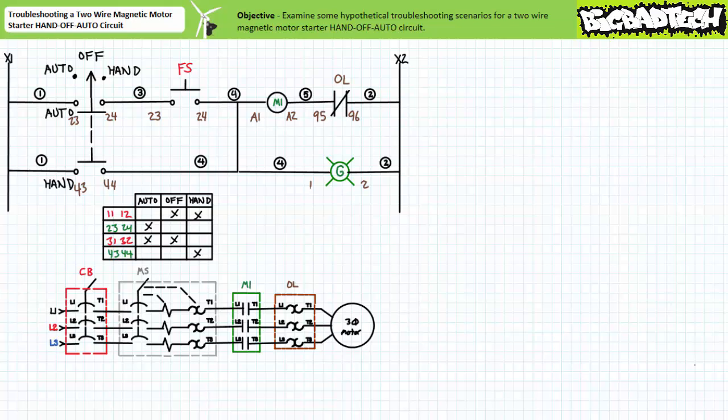Recall our two-wire magnetic motor starter hand-off auto circuit used a maintained contact three position selector switch and a push button standing in for a float switch to control the operation of a motor driven pump. An operator could place the circuit in one of three modes: Auto, where the simulated float switch automatically controls the motor; Hand, which turns the motor on whether the simulated float switch calls for it or not; or Off, which halts the motor even if the simulated float switch closes.